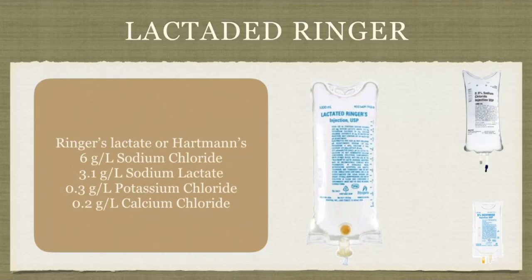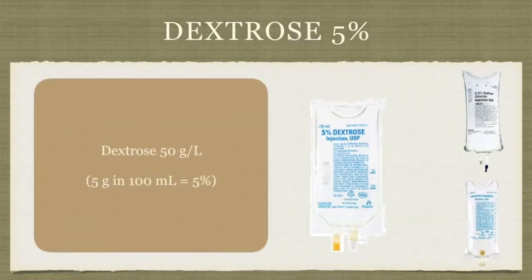Lastly, we have D5W, 5% dextrose solution. With this solution, we have about 5 grams of dextrose in 100 milliliters of water. So this is basically sugar water, and we use this if we have somebody that is hypoglycemic or needs a maintenance infusion to maintain the glucose levels in their blood as they're maybe fighting an infection or in long-term recovery. So we don't use this one much pre-hospitally.